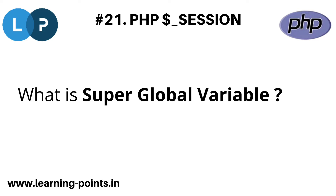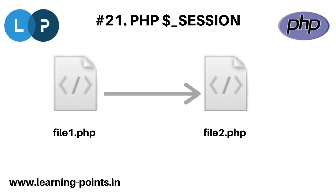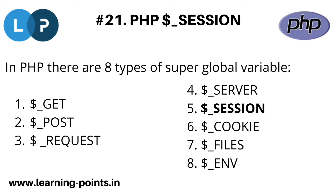In PHP there are some predefined variables which can be accessible from one page to another page. That means we can create a variable from one page and access it from a different page. There are basically eight types of super global variables: $_GET, $_POST, $_REQUEST, $_SERVER, $_SESSION, $_COOKIE, $_FILES, and $_ENV. Today we will discuss PHP session.